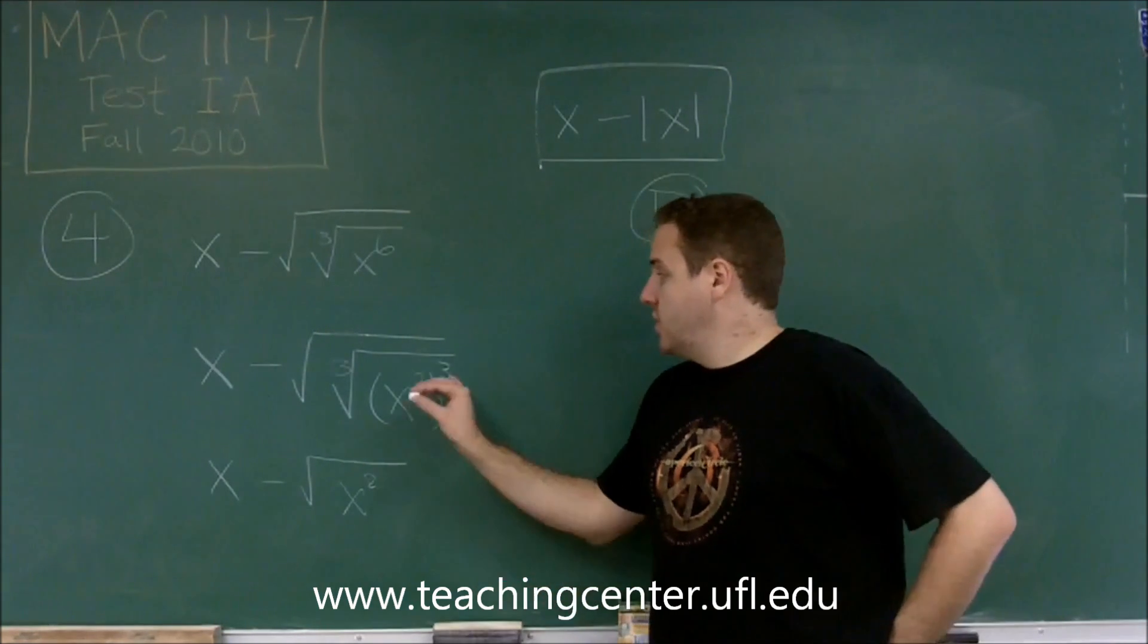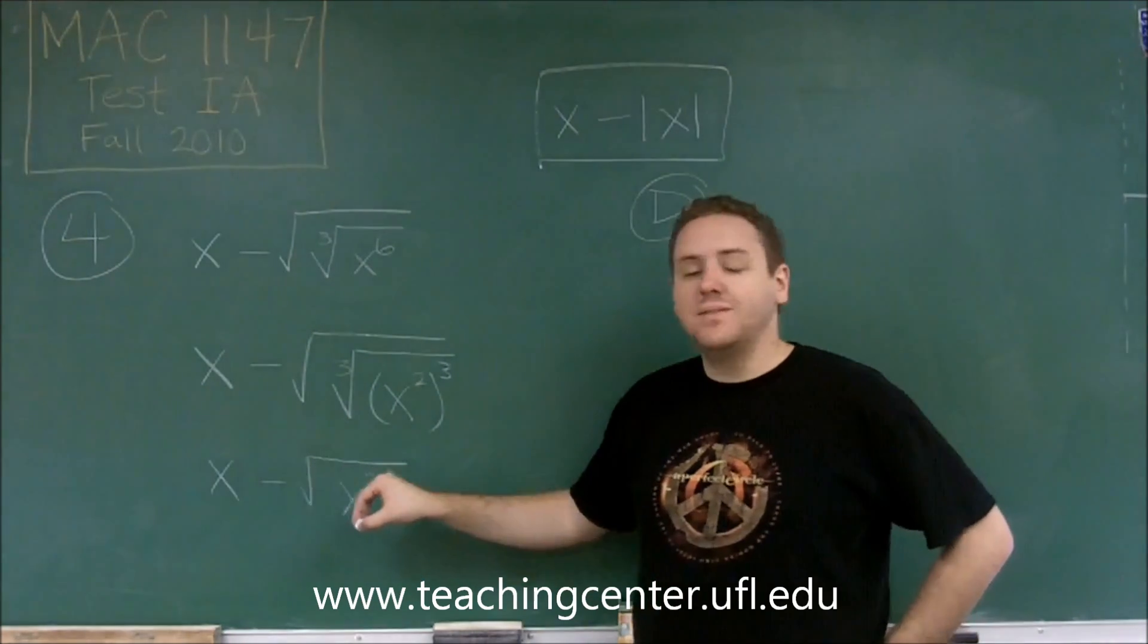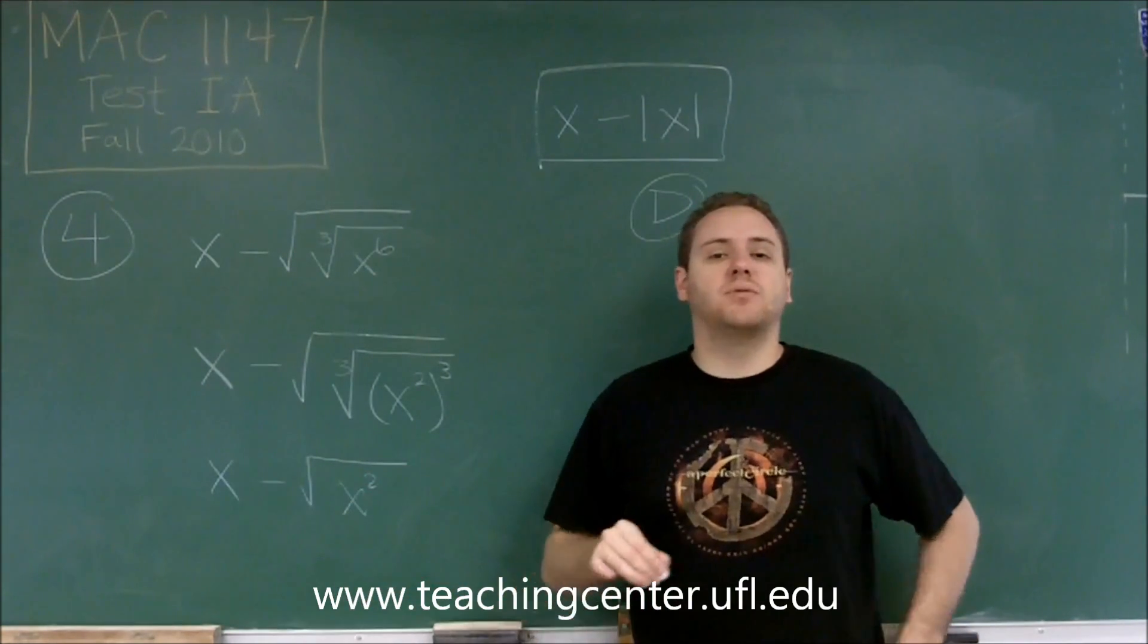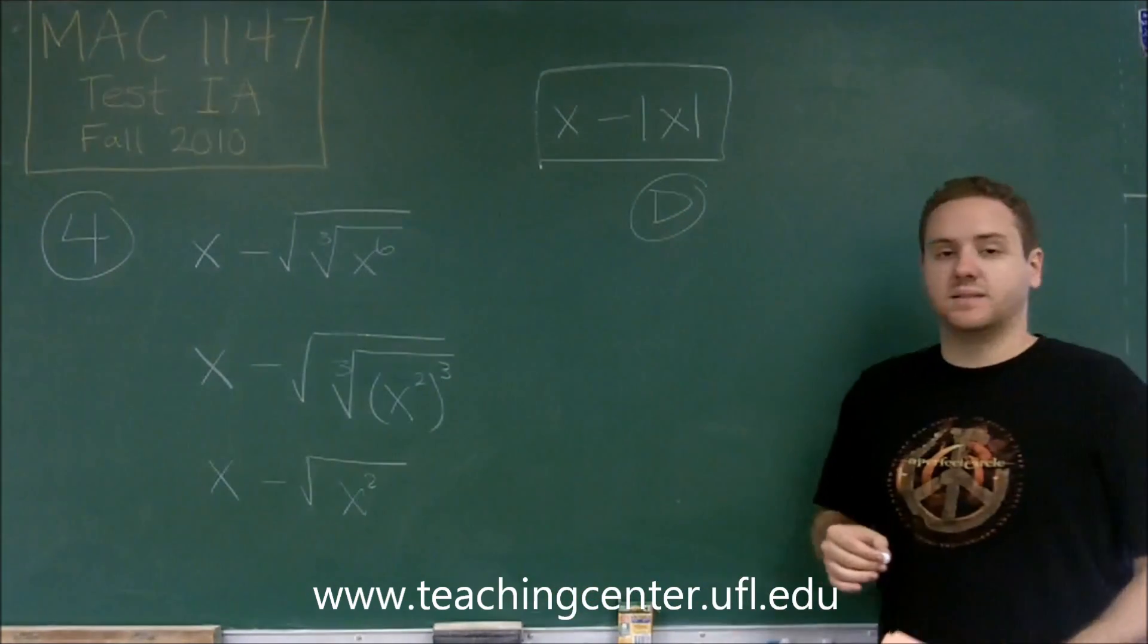Cube root, that can only ever have one answer, unlike even root. So we can get rid of that, no questions asked. However, when you have an even root, you have to be careful if you have an even power underneath. You might end up having to do an absolute value, like in this case.